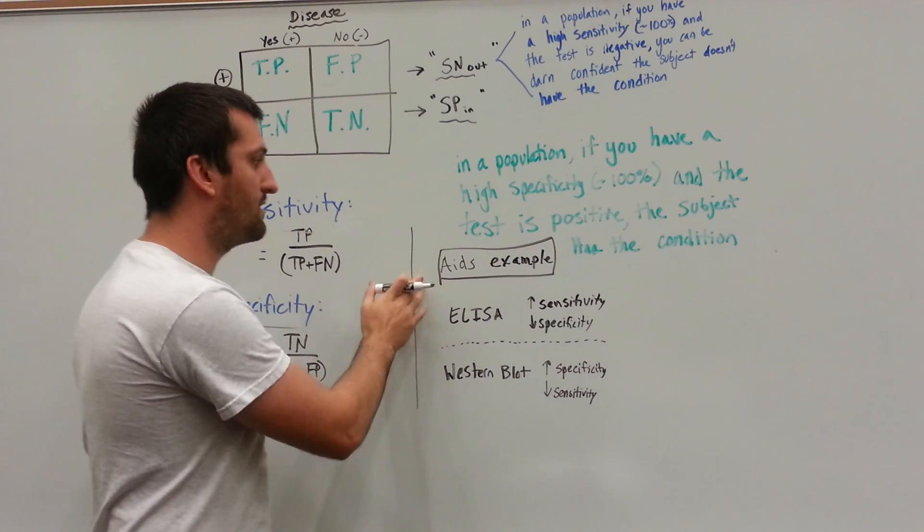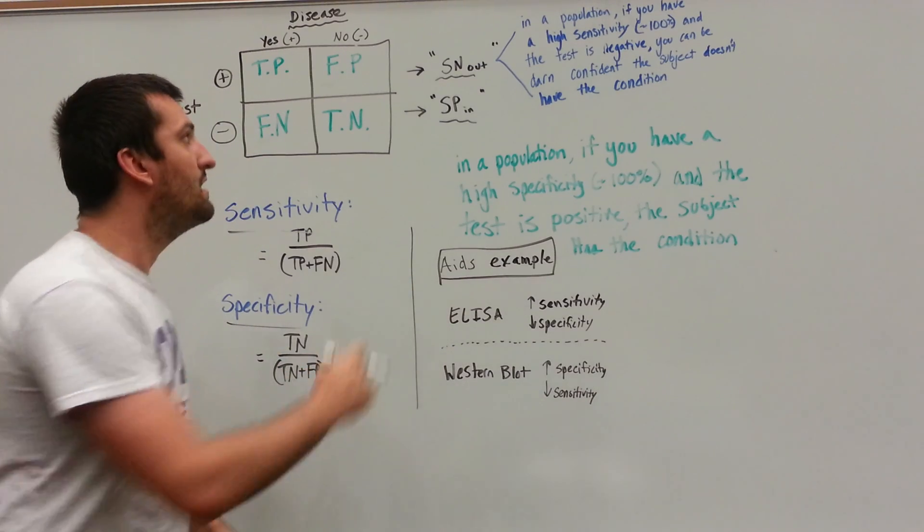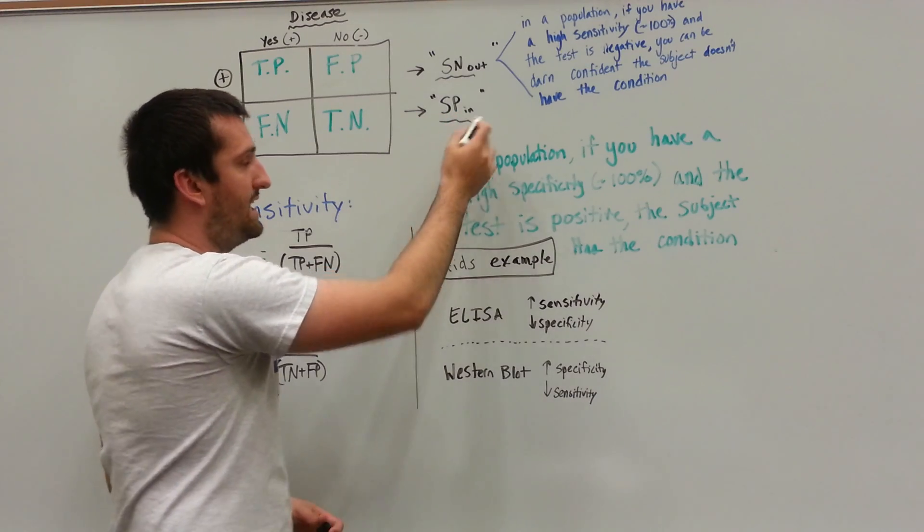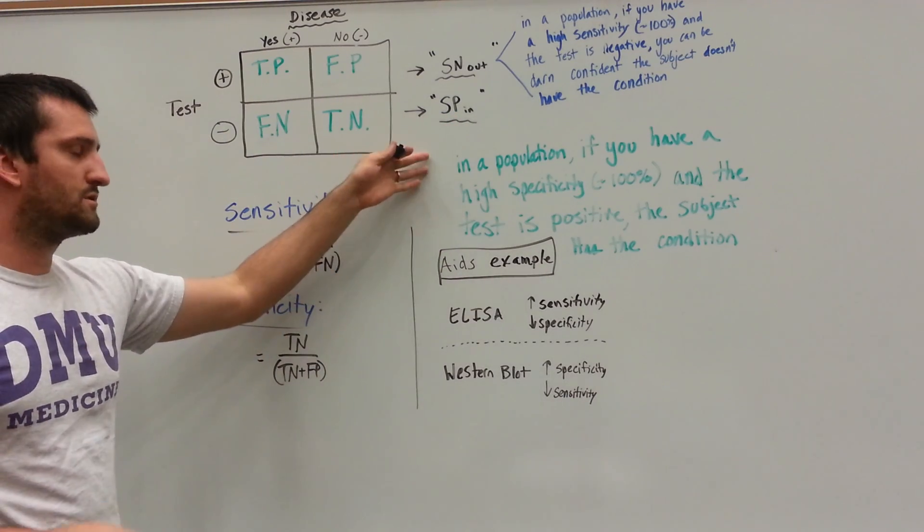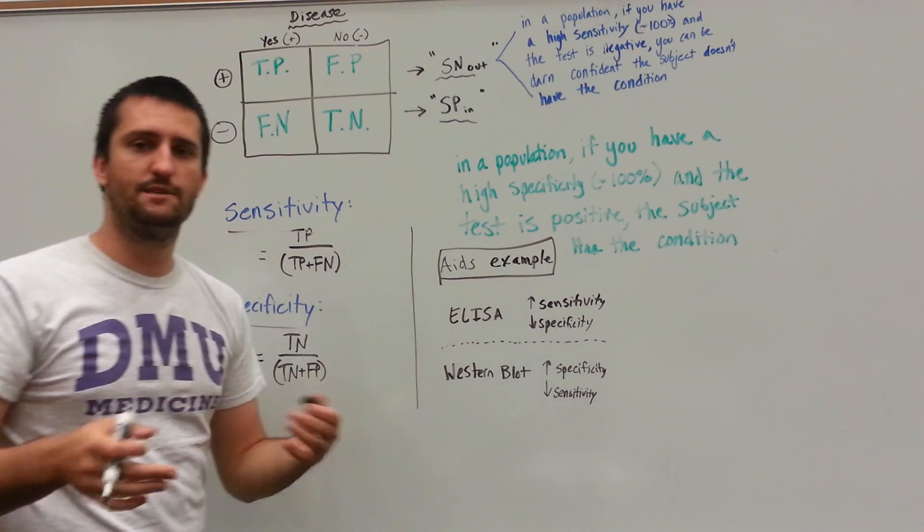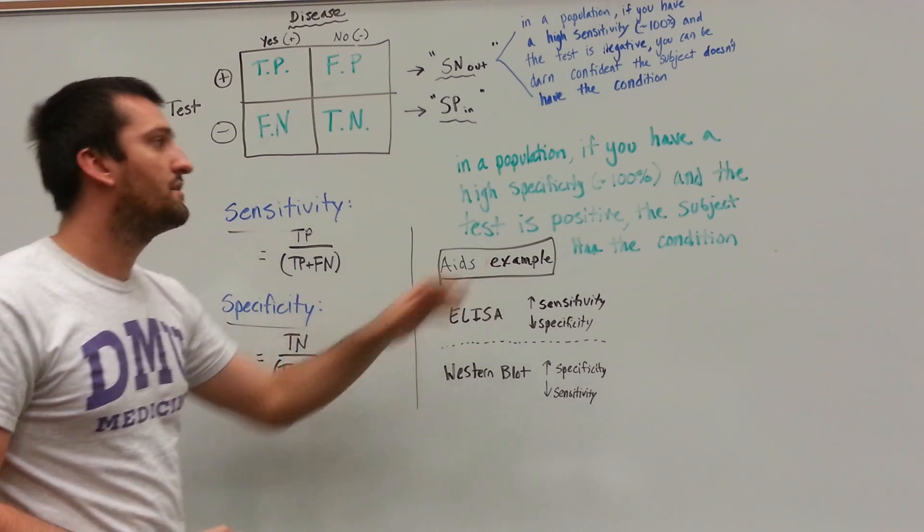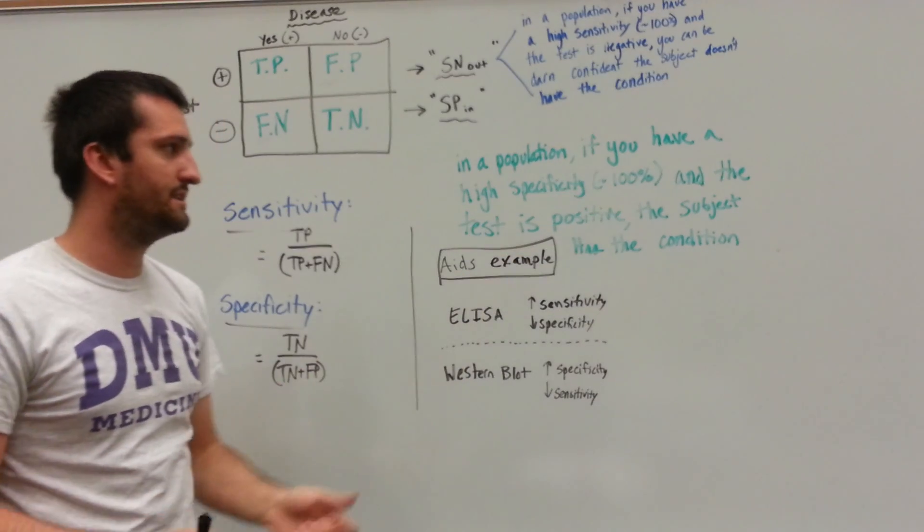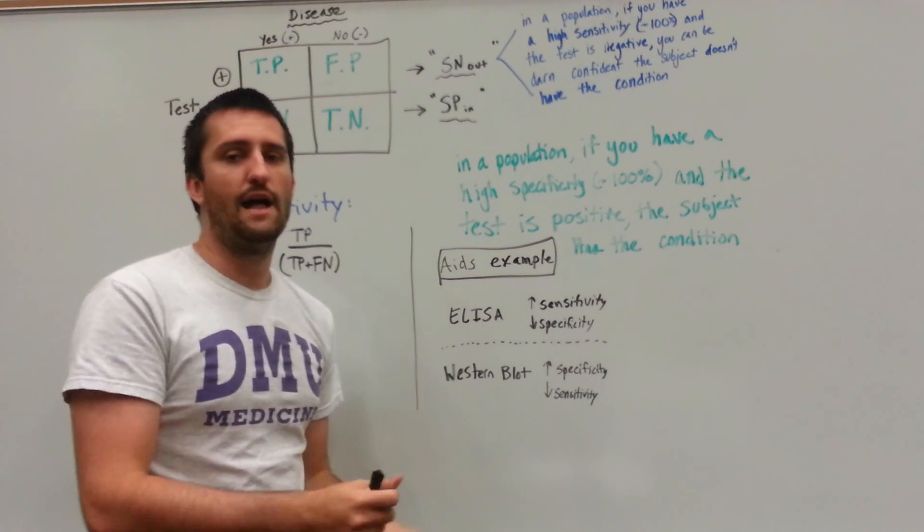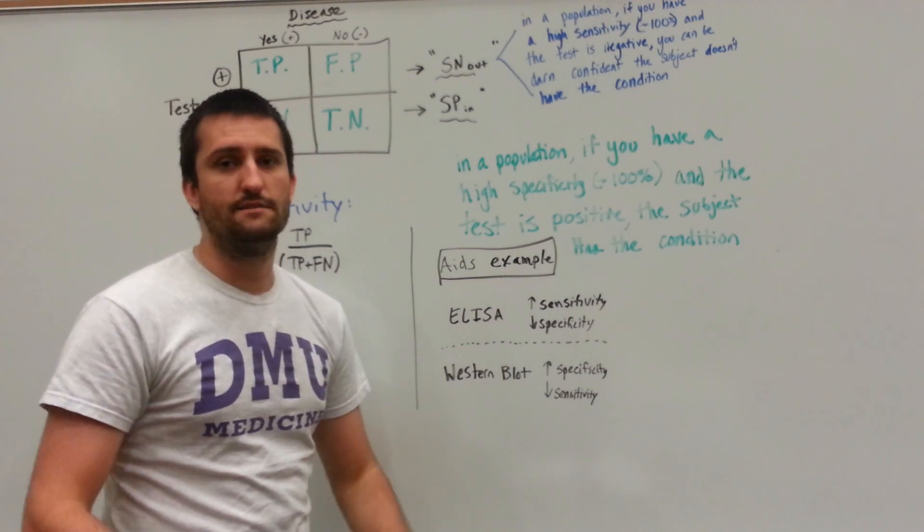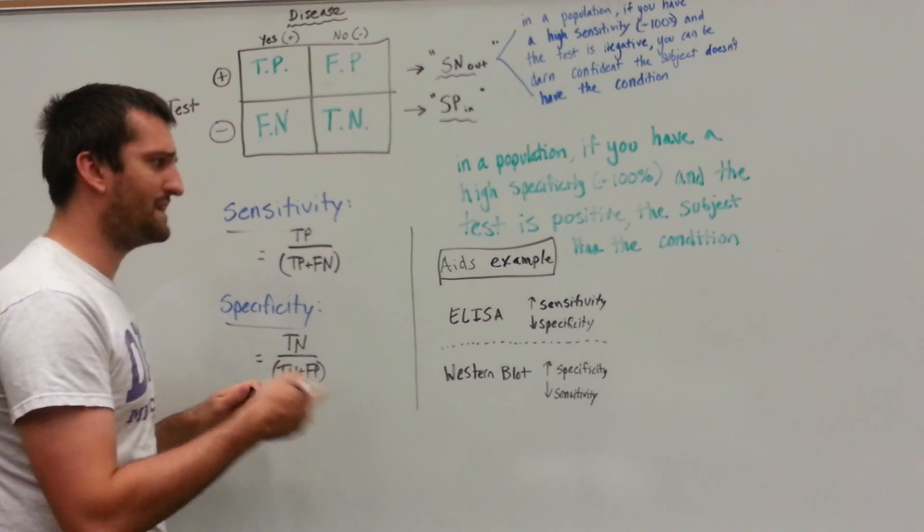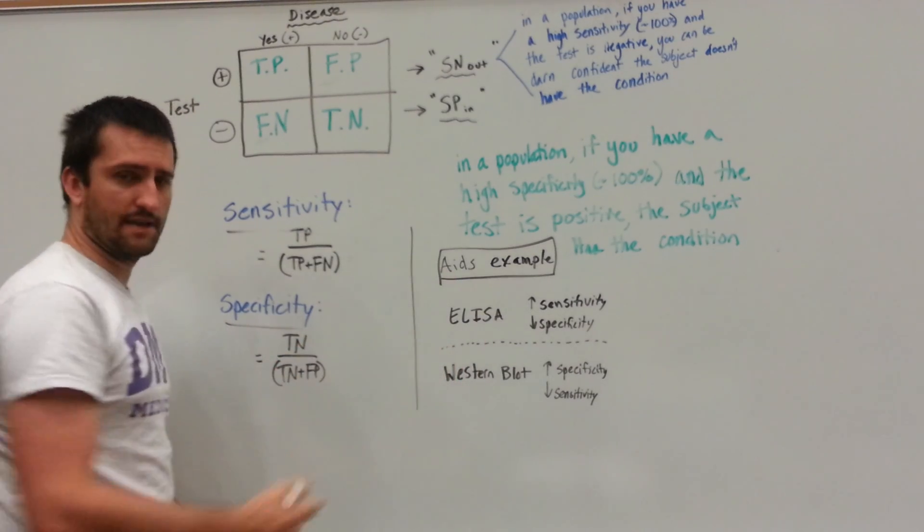Now, if that still doesn't make sense, hang on with me because I'll give you an example that hopefully will tie this together. Now, the SpIn, the specificity in, goes for, in the medical school population that we're describing, if you have a very specific test for diabetes that approaches 100% specificity, and the test is positive, it means that that patient will actually most likely have diabetes or whatever condition you're going for.